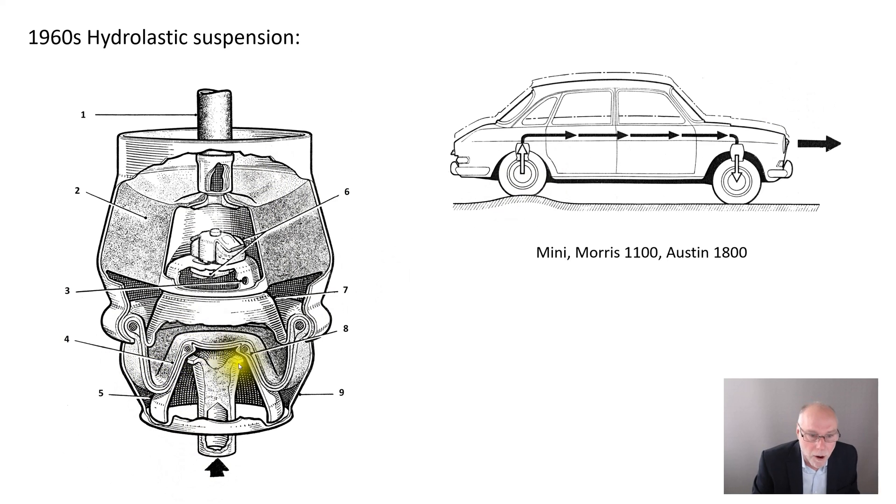The suspension arm moves this diaphragm up. It pushes fluid, and it's just a water-based fluid, through the damper valves. The dampers are built into the spring. And then the spring itself is this cone rubber which gets deflected. It changes in damper strength with deflection. No dampers do that today. And it's compact.